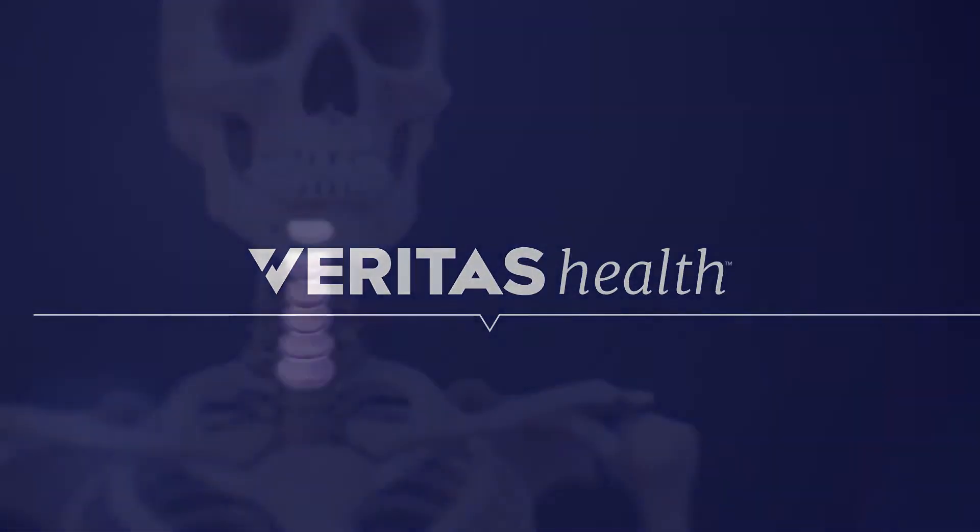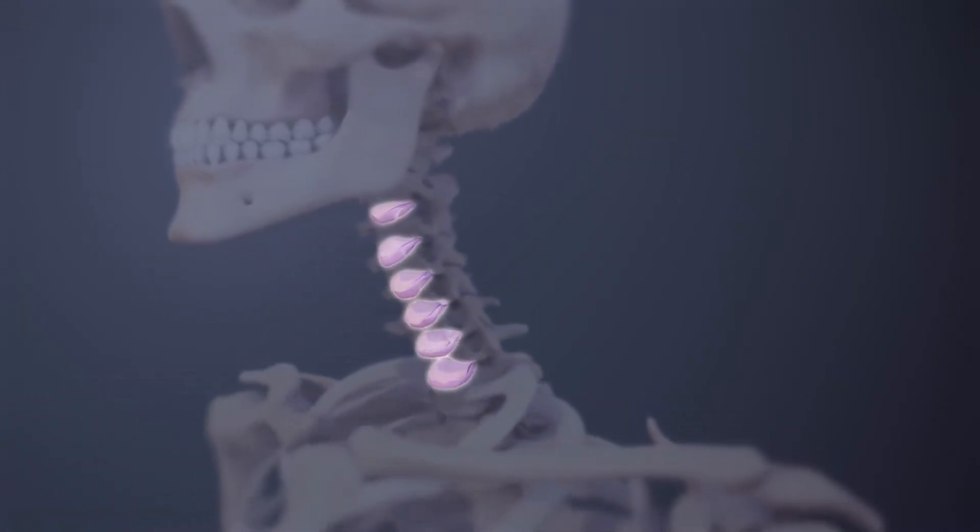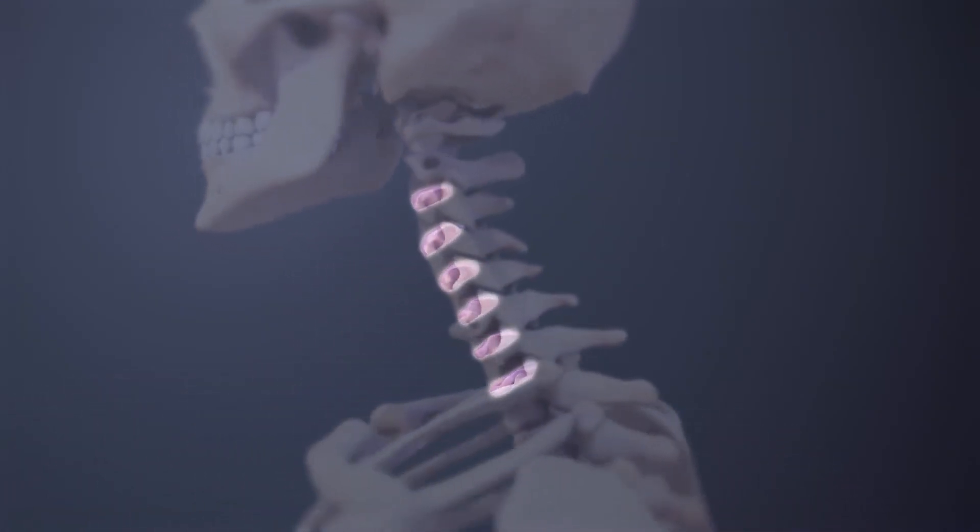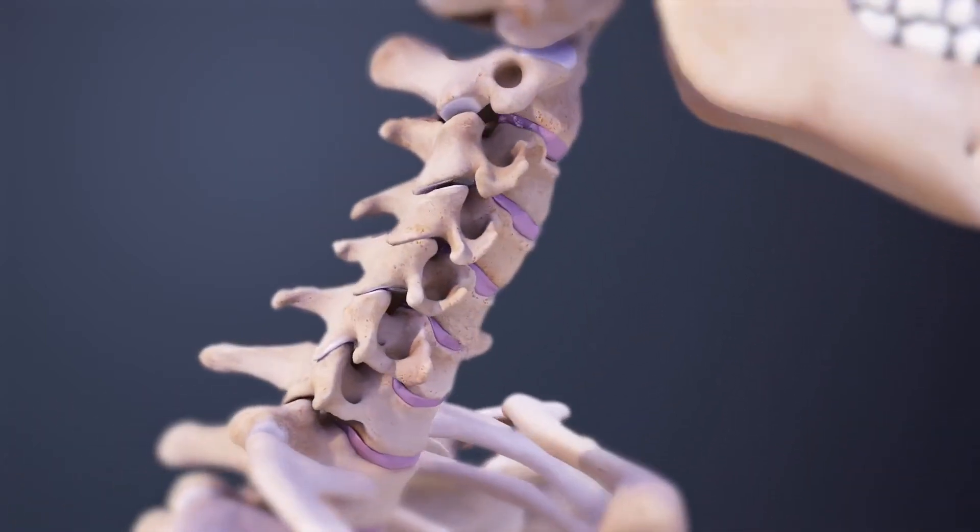There are six intervertebral discs in the cervical spine. These cervical discs are located between the adjacent vertebrae. They enable the highly mobile cervical spine to move in all directions while supporting the neck and head above.